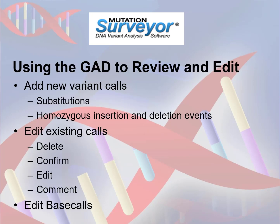The Graphical Analysis Display, or GAD, can be used not only to review your project but also to edit variant calls for a given sample. New variant calls for substitutions and homozygous indels may be added, and existing variant calls may be edited, confirmed, or deleted. Comments added to specific variant calls provide additional customization to the project. Base call editing in the trace files can help correct sequencing errors. Reprocessing the edited files can sometimes assist in producing a larger comparison region to extend automatic variant detection.